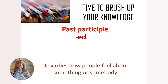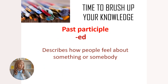Another type is the past participle adjective. The past participle is formed with the help of the ending -ed and describes how people feel about something or somebody. Let's see the examples: amazed, excited, or interested.